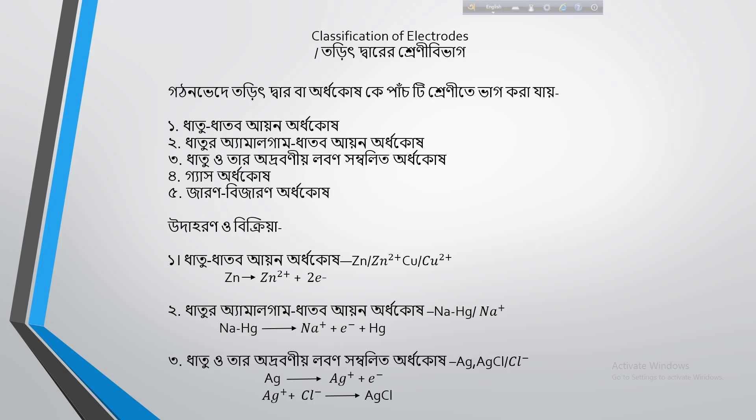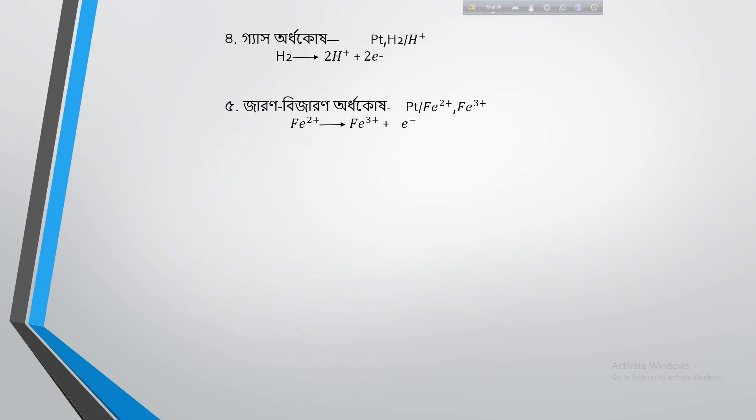Another type involves anions — for example, silver chloride electrode. The chloride anion is combined here and forms a half-cell. There is also the gas electrode — imagine platinum dipped into an acid solution with a gas passed over it.